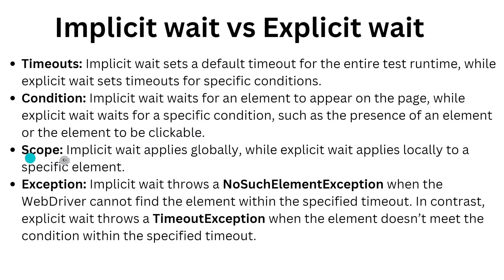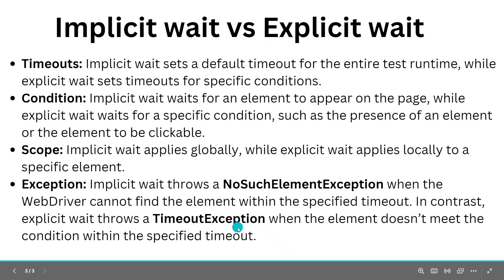Regarding scope: implicit wait applies globally while explicit wait is applied locally for a specific condition. Regarding exceptions: if you use implicit wait, it will throw a NoSuchElementException because WebDriver cannot find the element. But when using explicit wait, it will throw a TimeoutException.